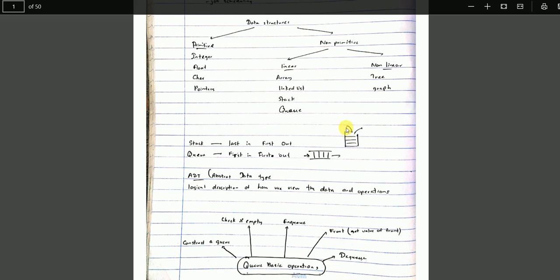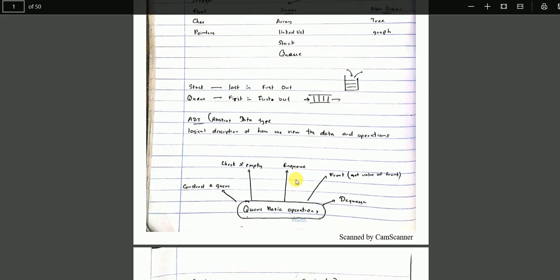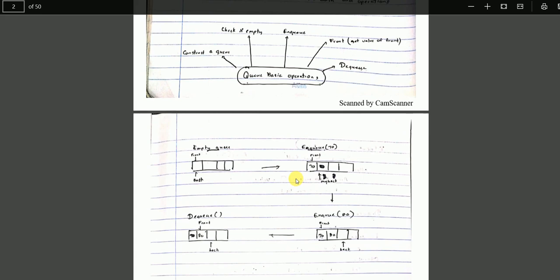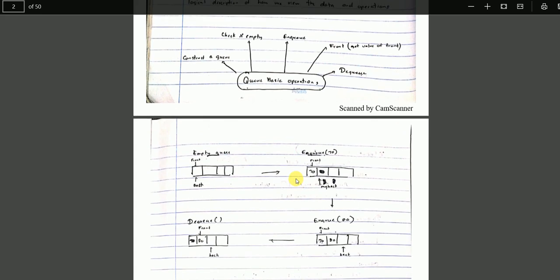Queue is an abstract data type - a logical description of how we view the data and operations. It's a mechanism where we have operations like add and remove. The implementation defines how these operations work in practice.